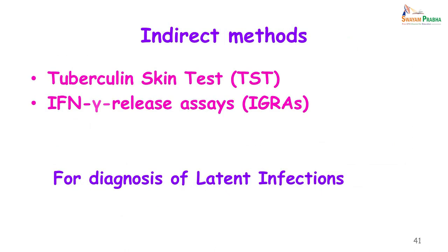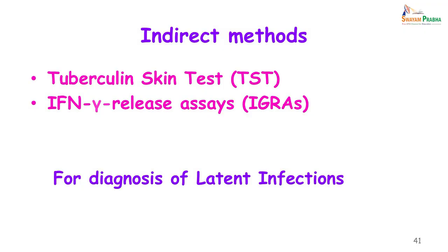So far we have looked at all the direct methods of seeing the bacilli, growing the bacilli, and doing drug susceptibility testing. Now let us look at some indirect methods for the diagnosis of tuberculosis. These tests only diagnose latent infection — remember, you have inhaled the bacilli, they are present in your body, but the infection has been contained. The two common tests are the tuberculin skin test and the interferon gamma release assays (IGRAs).